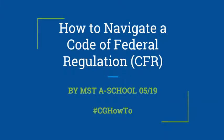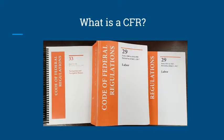Today we are going to learn how to navigate a Code of Federal Regulation, or CFR. First off, what is a CFR? The CFR, or Code of Federal Regulation, is the codification of the general and permanent rules published in the Federal Register by the executive departments and agencies of the federal government. They are updated and issued yearly.